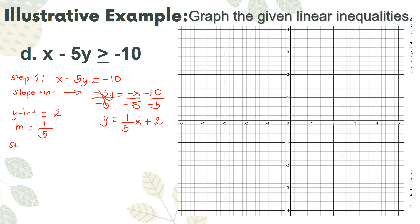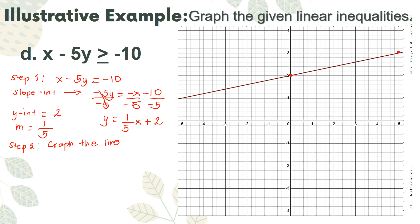Step 2: graph. Start at the y-intercept, which is positive 2. Our slope is 1 over 5, so move upward 1 unit and 5 units to the right to get the second point. Then connect the points.